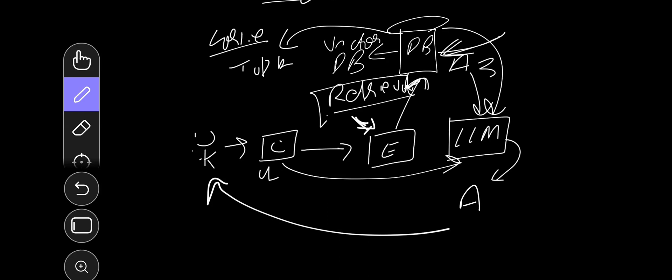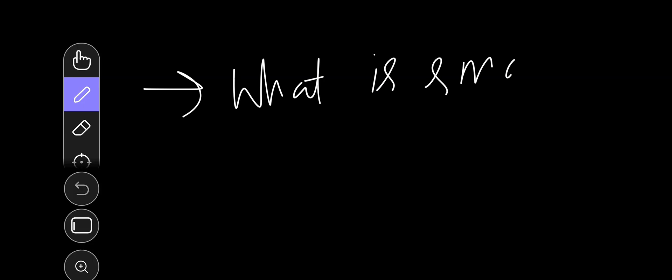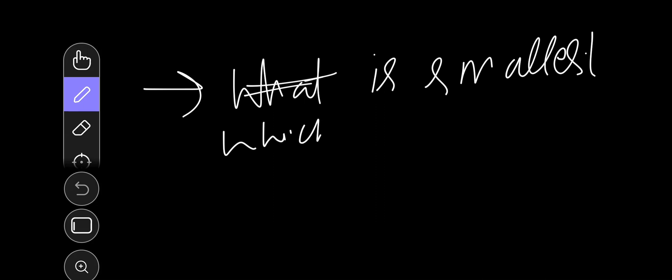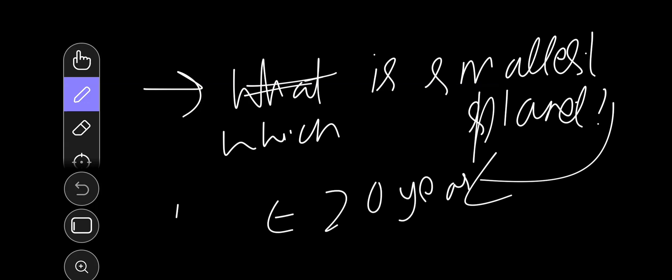The whole concept of RAG arises from the need for a closed LLM — one that returns only authenticated information or no information, never wrong information. For example, suppose someone asks which is the smallest planet. Twenty years ago the answer would have been Pluto, because at that time Pluto was considered the smallest planet.